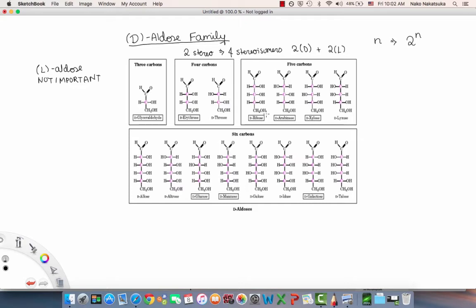D-ribose, in particular, is found in RNA. Finally, looking at the aldohexoses with six carbons, now we have four stereocenters, meaning we have 16 stereoisomers. Since we're just looking at the D, we have eight molecules. The ones you want to focus on are D-glucose, D-mannose, and D-galactose. These are going to come up later when we talk about disaccharides.